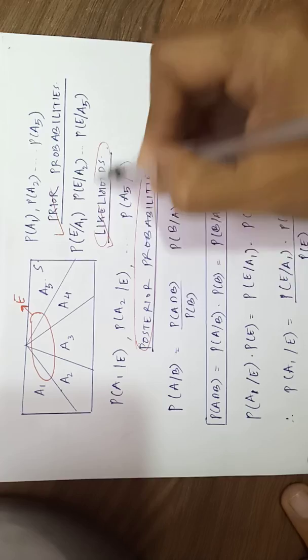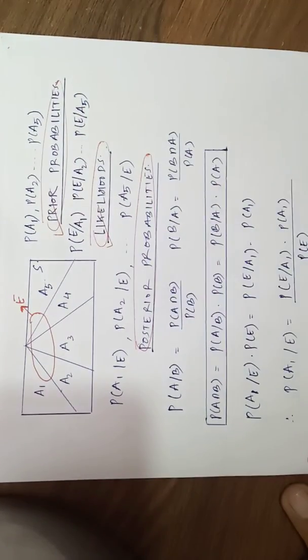There are three types of probabilities: likelihoods, prior probabilities, and posterior probabilities.